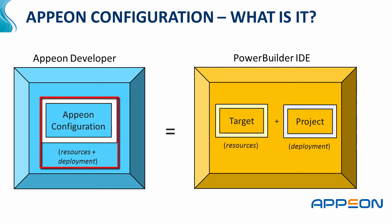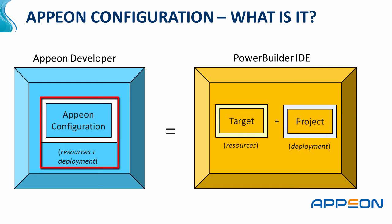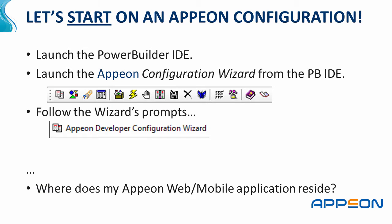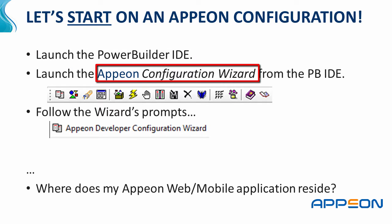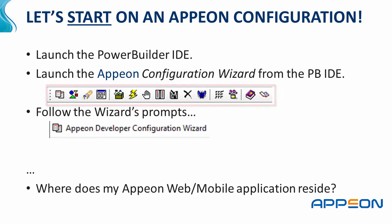In the Appeon configuration, it sits inside the Appeon developer tool. It also has a list of all the resources and how you would like to deploy. In this case, are we deploying for web or are we deploying for mobile devices? In this particular tutorial, we're going to start by launching the PowerBuilder IDE, then launching the Appeon configuration wizard from the IDE because we have a toolbar that's been inserted in the IDE from the install that basically gives us access to all the tools inside the Appeon developer. From here, we're actually going to use the configuration wizard, which is the far left-hand icon, and I'm going to launch that and follow through all the dialogues.